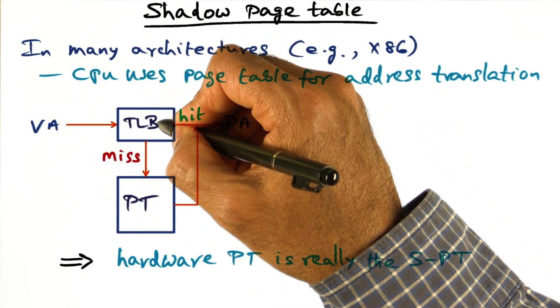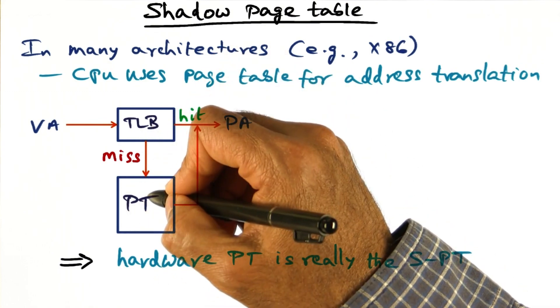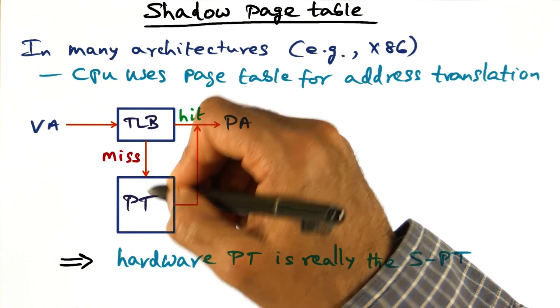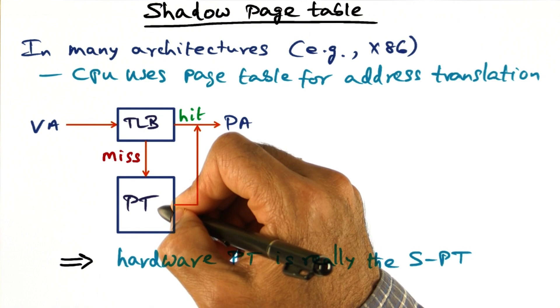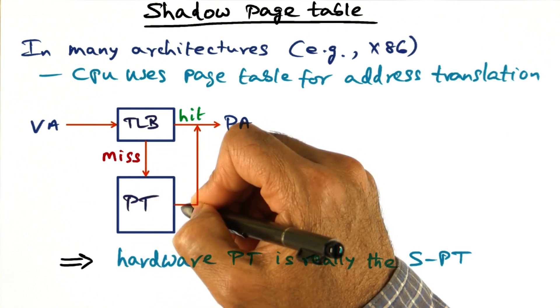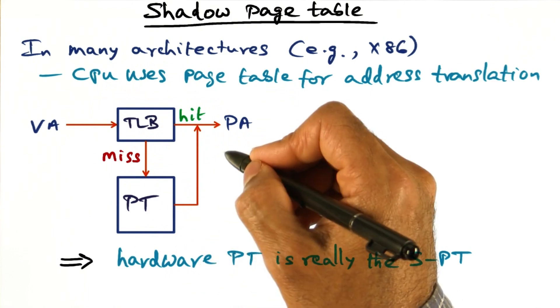If it is a miss, the CPU knows where in memory the page table data structure is kept by the operating system. Therefore, it goes to the page table, which is in main memory, and retrieves the specific entry, which gives it the translation from the virtual page number to the physical page number.